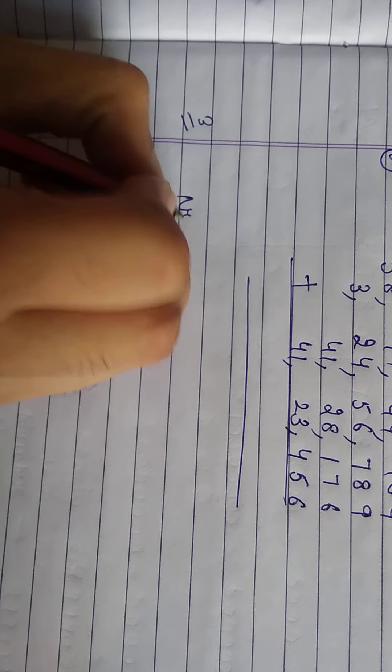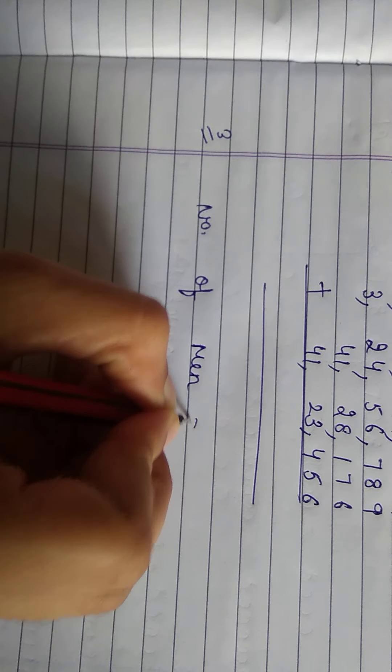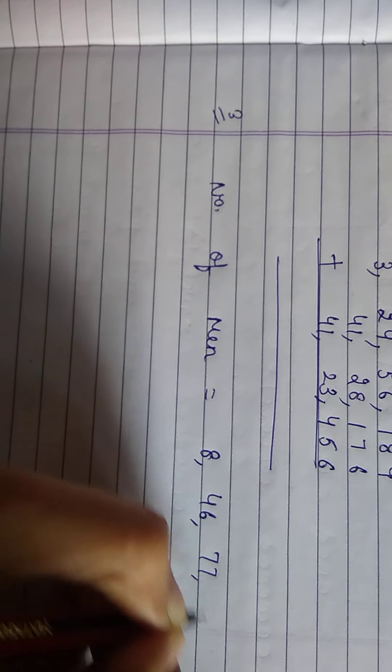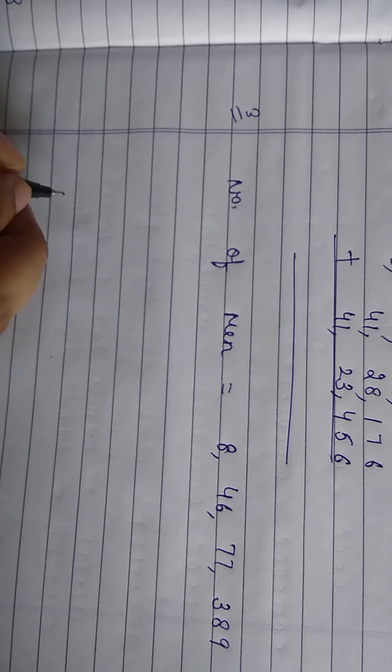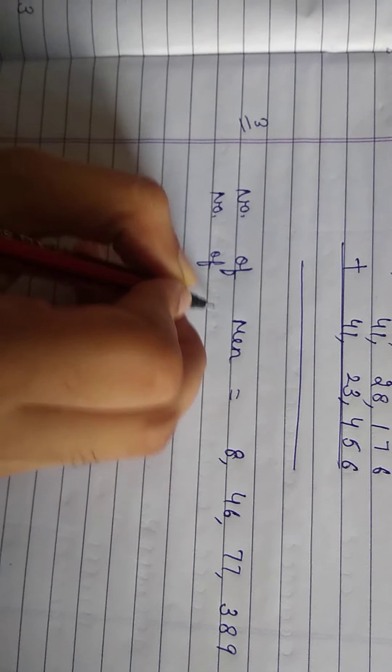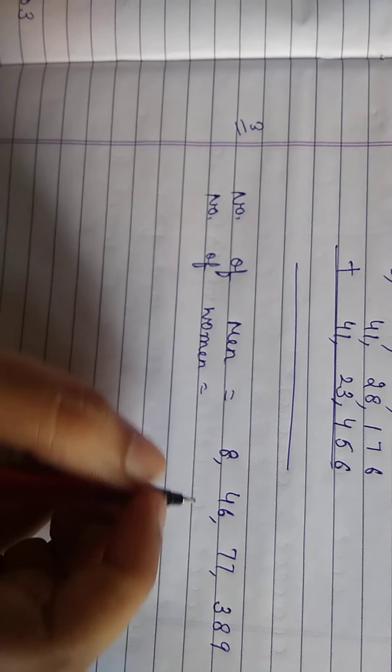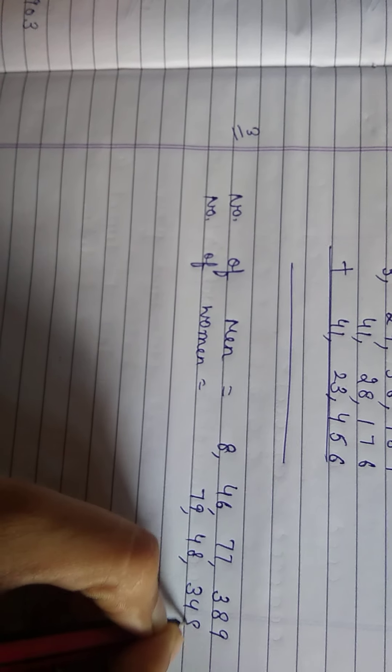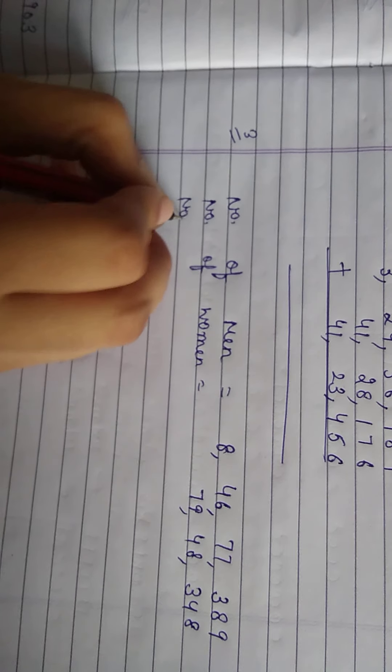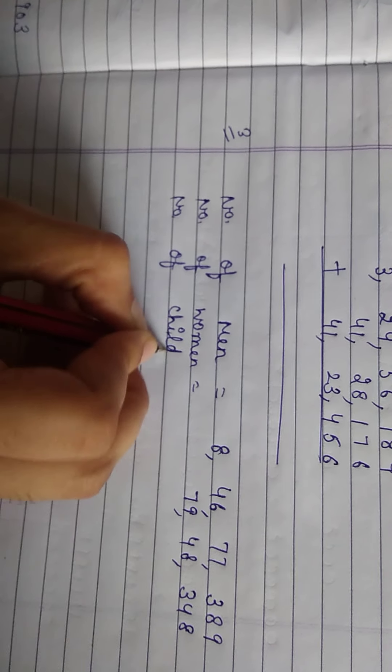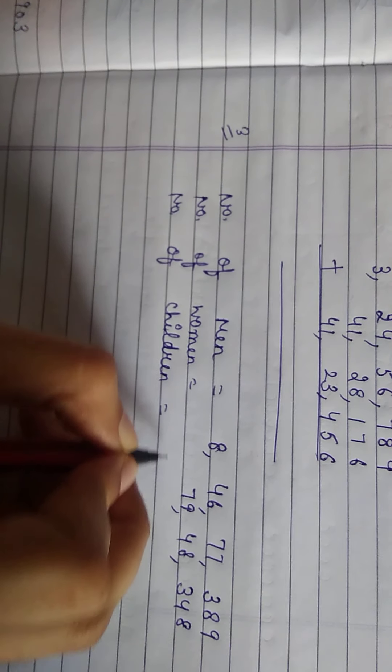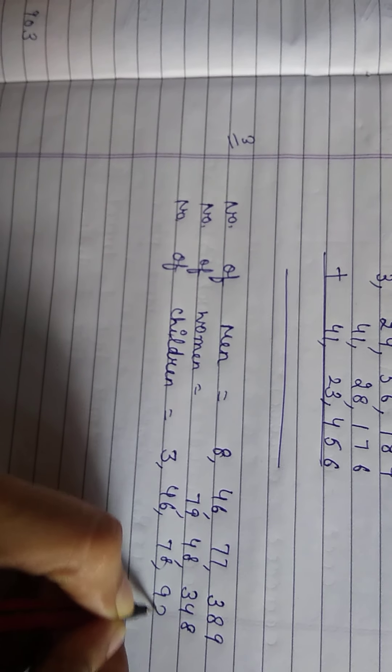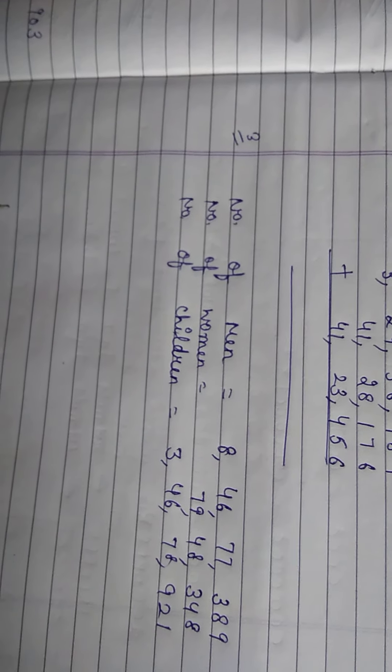So how we can write that down? First of all we will write down number of men. How many? 8,46,77,389. Number of women is 79,48,348. Then number of children is equal to 3,46,78,921. What is the total population of the city?